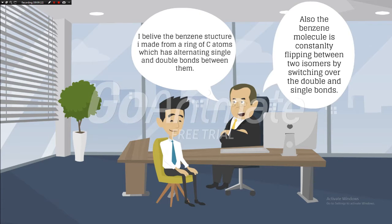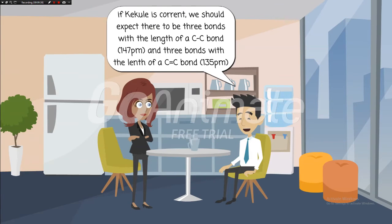Also, the benzene molecule is constantly flipping between two isomers by switching over the double and single bonds. If Kekulé is correct, we should expect there to be 3 bonds with the length of a C-C bond and 3 bonds with the length of a C=C bond.